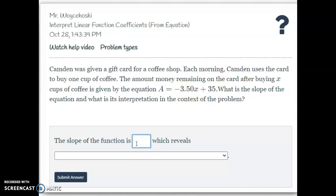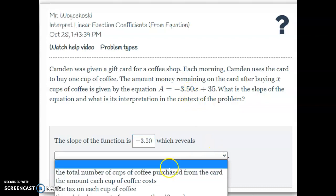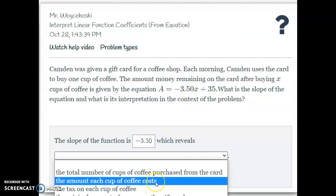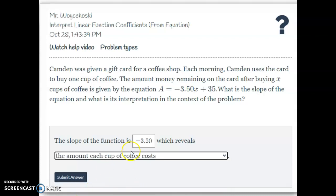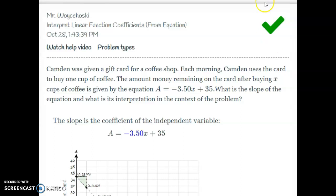Well, every time I get a cup of coffee, I'm going to lose $3.50 off that gift card. So the slope is negative 3.5. You could put 3.50. And that looks like it's going to be the cup of coffee, the cost for every cup. So it's not the total number of cups. It's not the amount of each cup. Oh wait, maybe it is this one here. The amount each cup of coffee costs. So every time I buy a cup of coffee, it's going to cost me $3.50. And there we go.